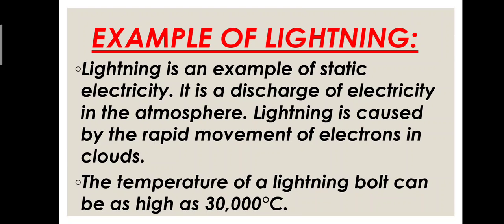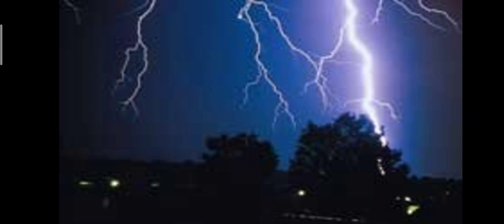The temperature of a lightning bolt can be as high as 30,000 degrees Celsius, which is a very high temperature. That is why it is advised that whenever lightning or a thunderstorm is occurring, people should not stand outside because it is very dangerous. Lightning bolts can travel at around 210,000 kilometers per hour. This thunderstorm mostly occurs during rainfall, so it is very important for us to stay safe from it.